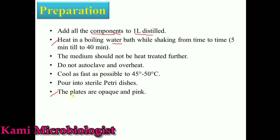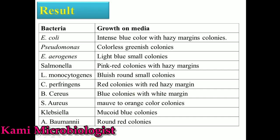The bacterial colonies that appear on this media are as follows: E. coli produces intense blue color colonies with metallic sheen; Pseudomonas produces colorless to greenish colonies; Enterobacter aerogenes produces light blue small colonies; Salmonella produces pink to red colonies with metallic sheen; Listeria monocytogenes produces blue round small colonies; Clostridium perfringens produces red colonies with red metallic sheen; Bacillus cereus produces blue colonies with white margin; Staphylococcus aureus produces orange color colonies; Klebsiella produces mucoid blue colonies; and Acinetobacter baumannii produces round red colonies.